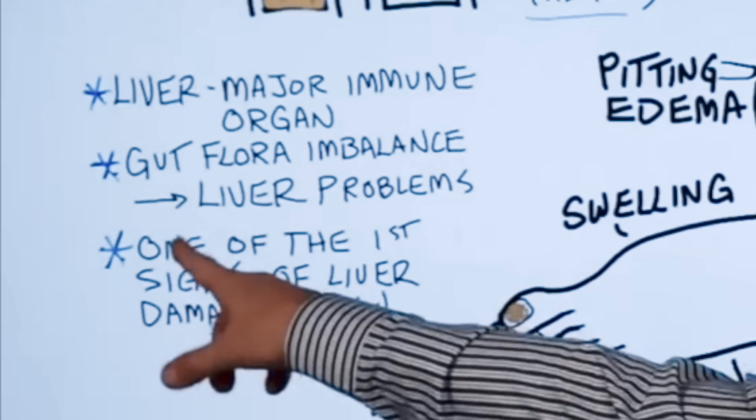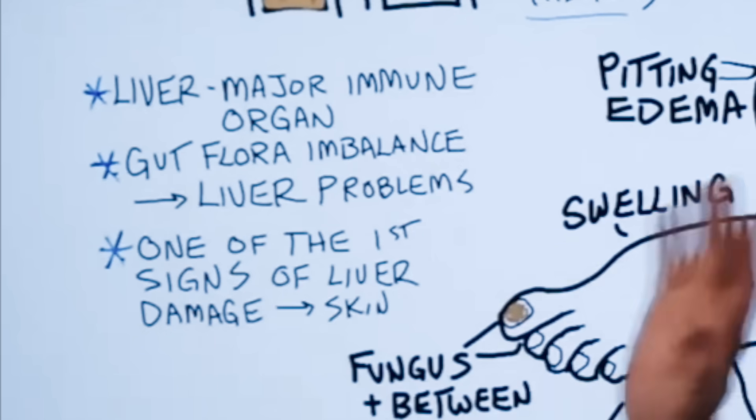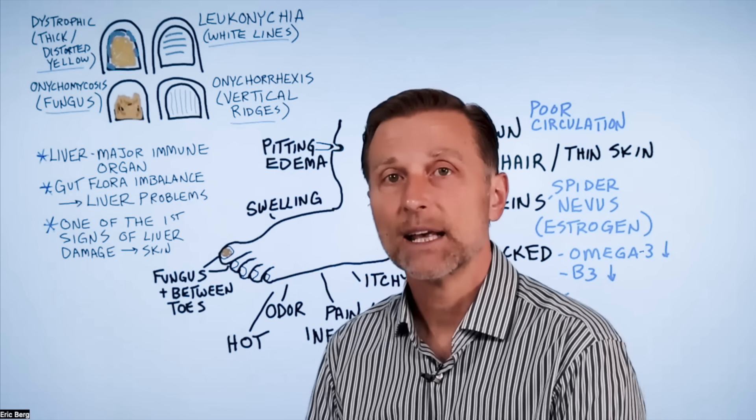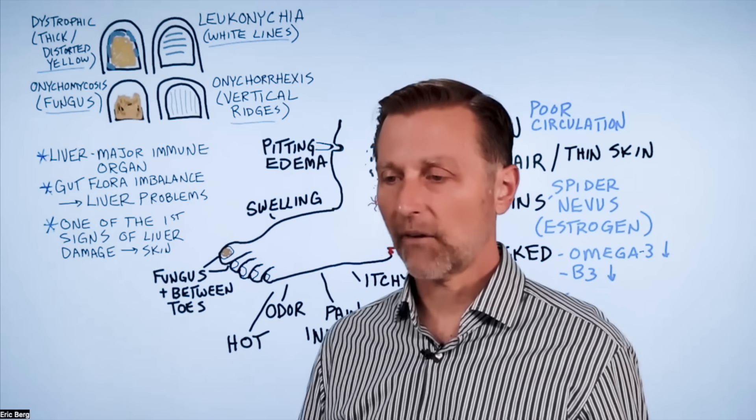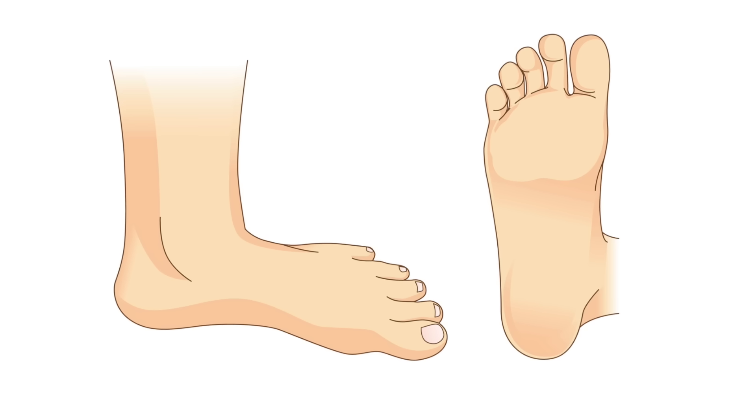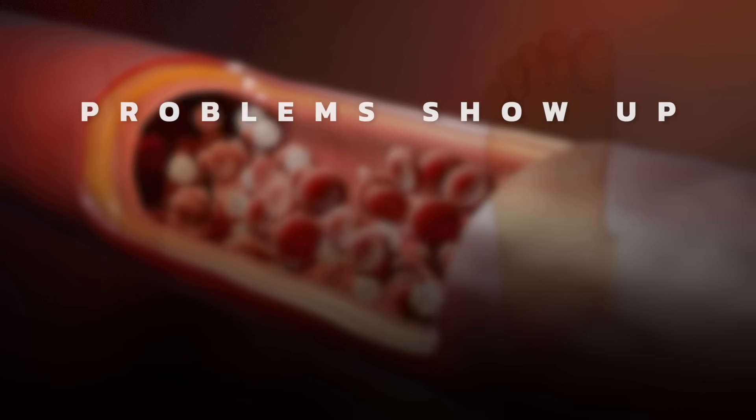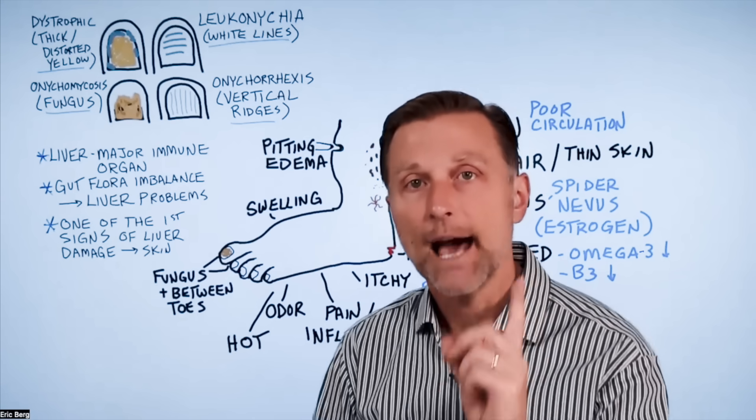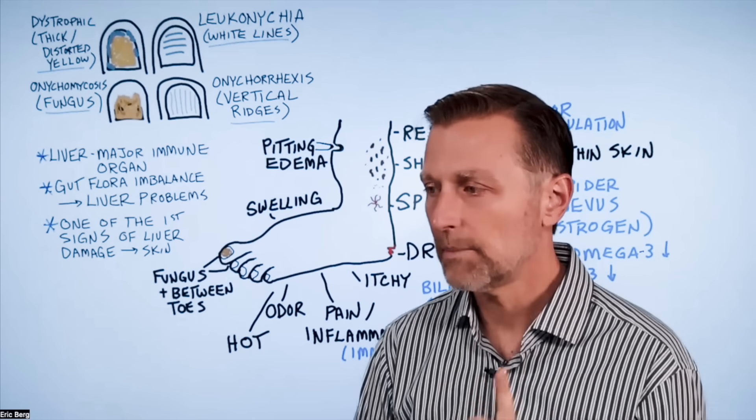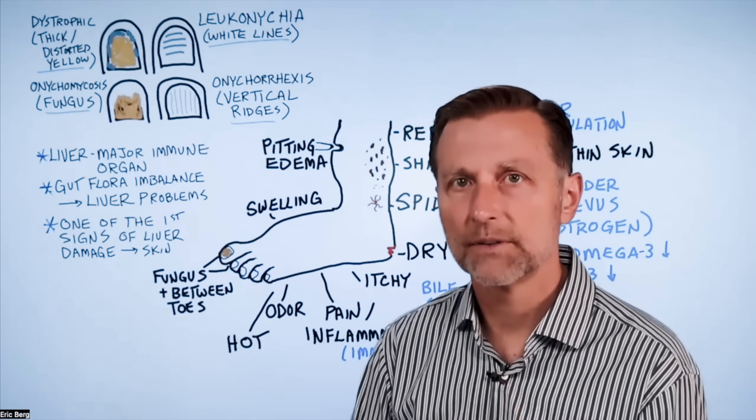One last point. One of the first signs of liver damage really shows up in your skin. And probably the reason why it would show up in your foot is because the foot gets the least blood flow. And so problems show up probably more commonly than in other places. Now the question is, what are the best foods to reverse liver damage? For that information, you should check this video up right here.